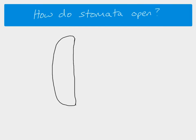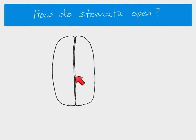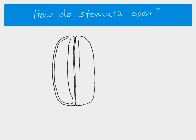So here is a guard cell and here's another guard cell. At the moment you can see that these guard cells are touching each other here, so there's no gap in the middle — the stoma is closed. Now these are plant cells which means they have a cell wall, and the cell wall is thicker on the inside — the side next to the opening — and thinner on the outside, and that's important in terms of understanding how the stomata are going to open.